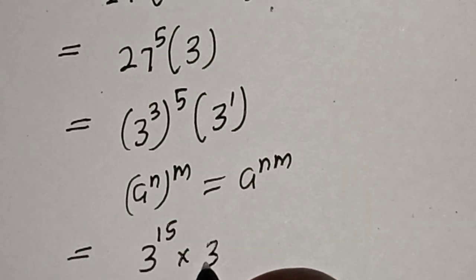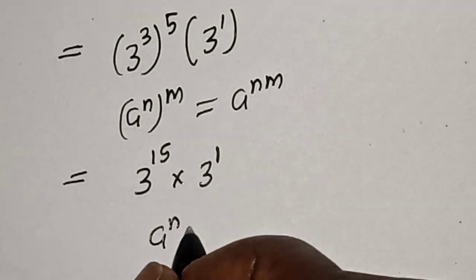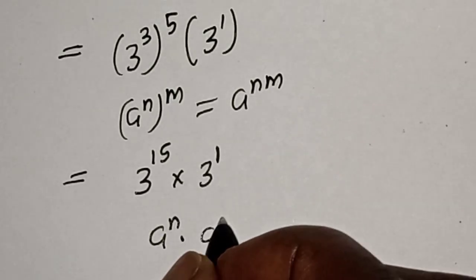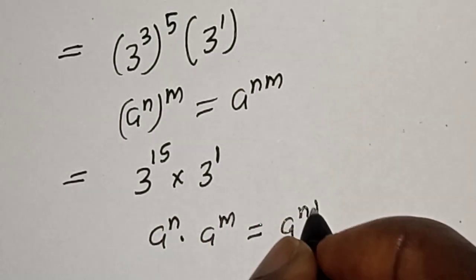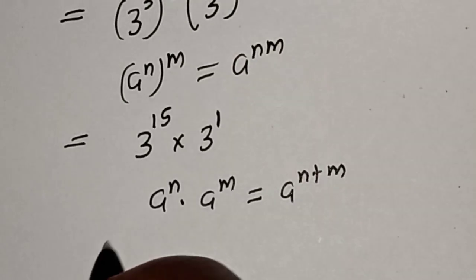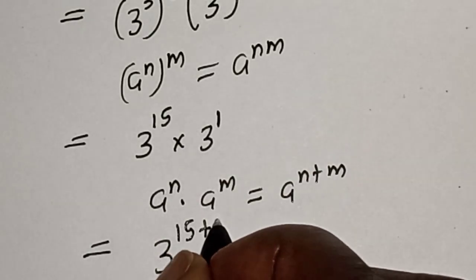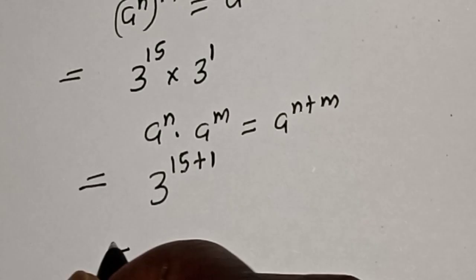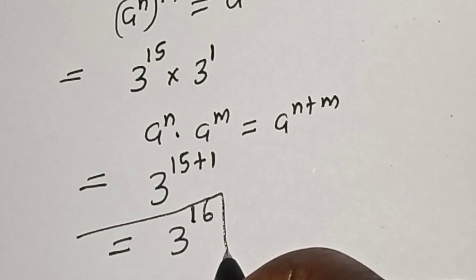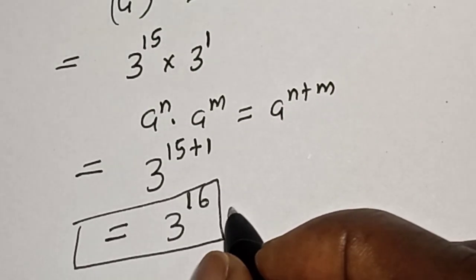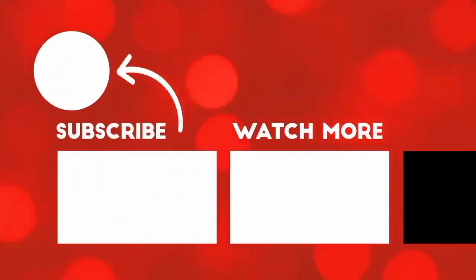Multiplied by 3 raised to power 1. Also take note of this rule: if you have a raised to power n, multiplied by a raised to power m, this is equal to a raised to power n plus m. Then this equals 3 raised to power 15 plus 1, equal to 3 raised to power 16, and this is the final answer. Before you leave, like, share, comment and subscribe. Thank you, bye bye.